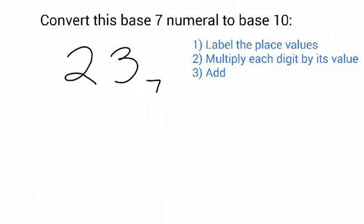Okay, to do this problem, the first step is to label each digit with a place value. So I mark them off like this, and that 3 is in the ones column. Since this is base 7, the next column over is the 7's column.